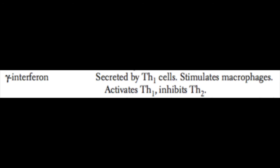In Th1, we have secretion of IL-2 and interferon gamma. IL-2 stimulates growth of helper and cytotoxic T cells, so it's a pan-T-cell stimulator. Interferon gamma can activate macrophages as well as T helper-1 cells. Remember, this suppresses the T helper-2 cell response. It also has antiviral and antitumor properties, mainly through activating NK cells and CD8 T cells.